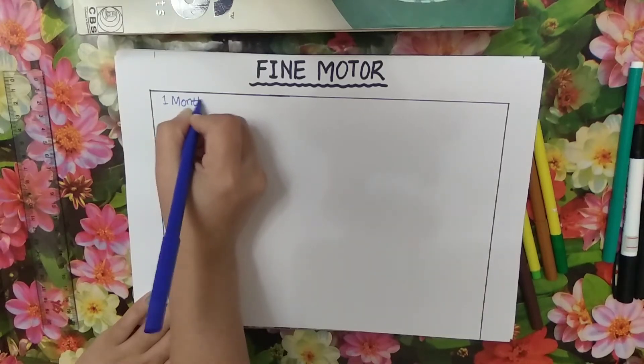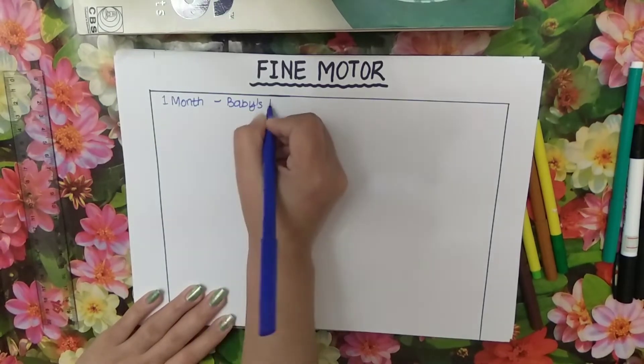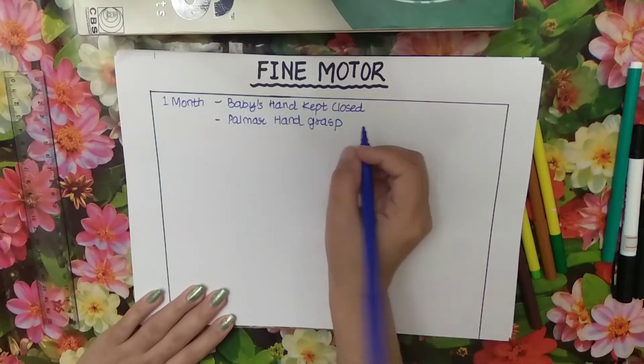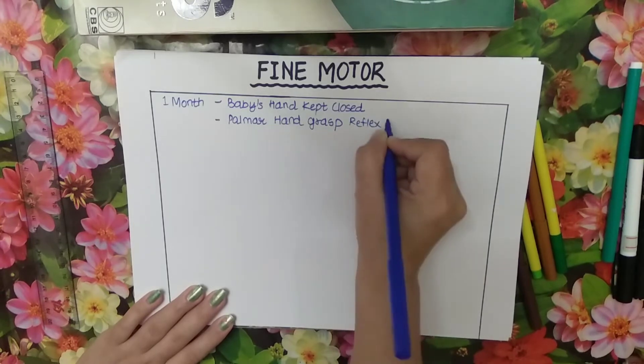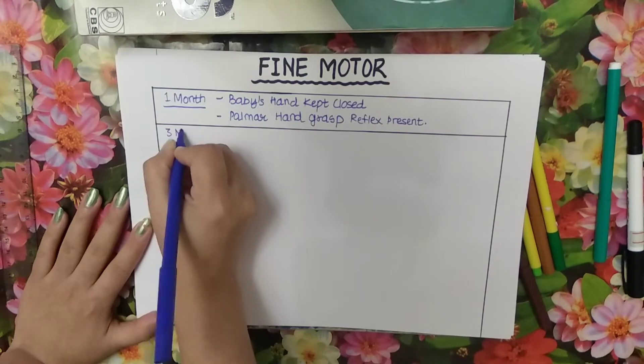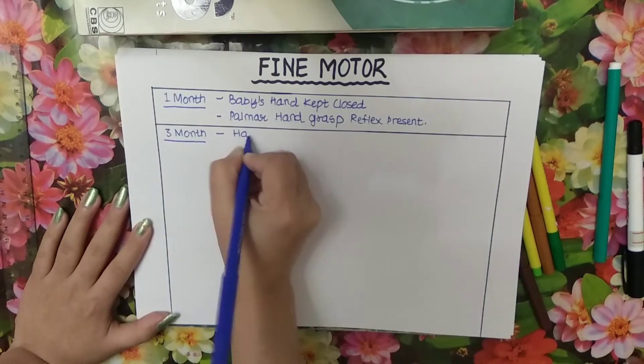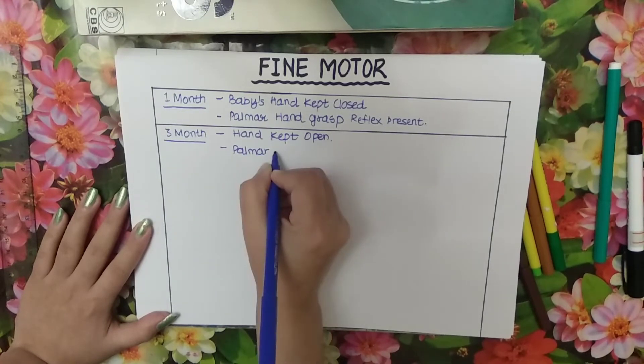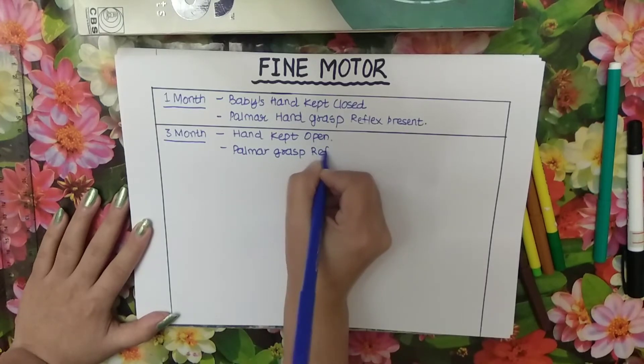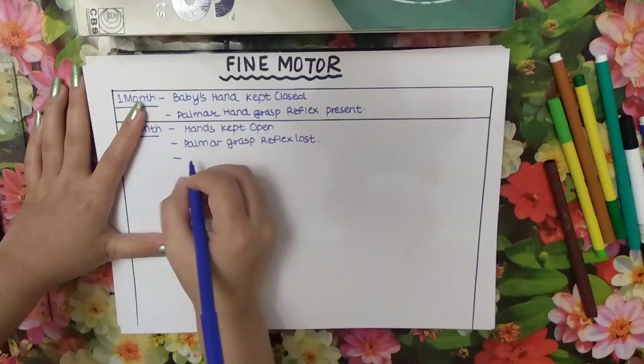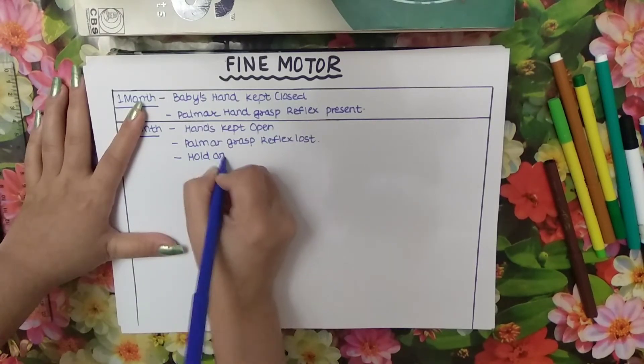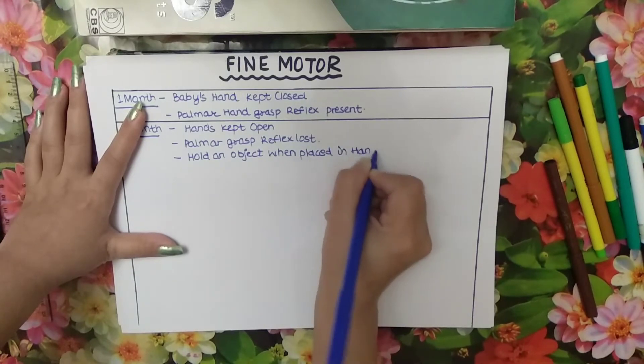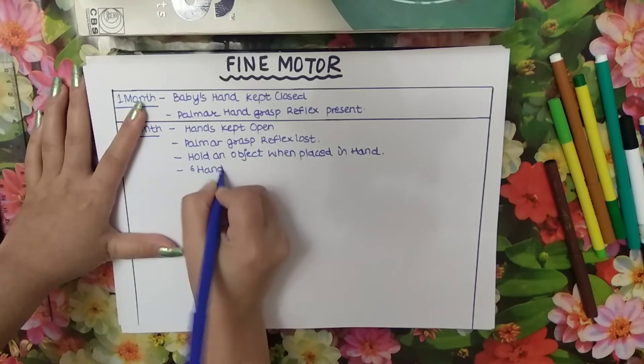In first month baby's hand kept closed and Palmer hand grasp reflex present. Three month baby hand kept open, Palmer grasp reflex closed, and baby can hold an object when placed in hand. Hand regard appears in third month and it disappears at 20th week.